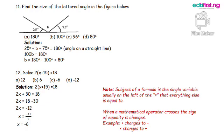Question 12: Solve 2 open bracket X plus 15 close bracket equals 18. Solution: Opening the brackets, we have 2X plus 30 equals 18.